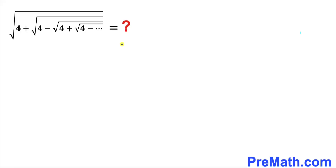Welcome to pre-math. In this video we are going to find the value of a problem that involves nested radicals. We have the square root of 4 plus the square root of 4 minus the square root of 4 plus the square root of 4 minus, and it goes on and on.